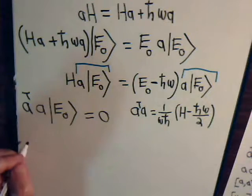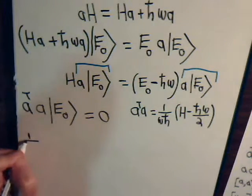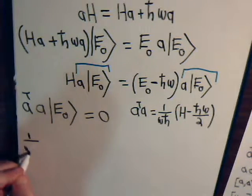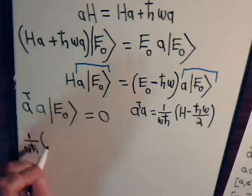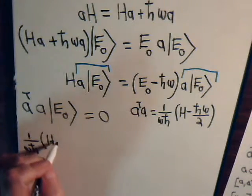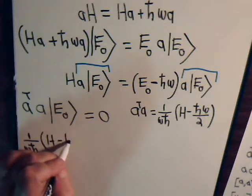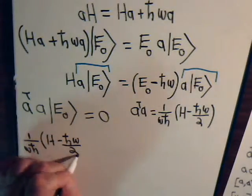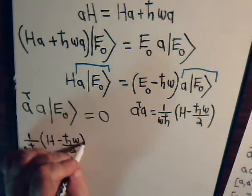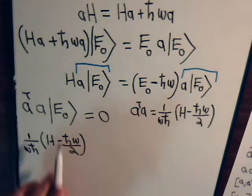So let's go over here and substitute this for A†A. So now we have 1 over ωℏ times the Hamiltonian minus ℏω over 2 times this equals zero.